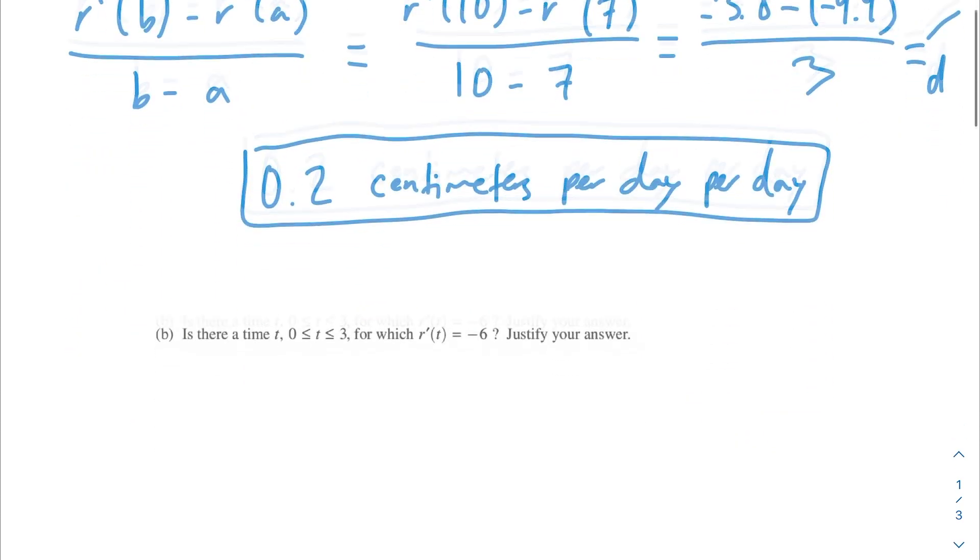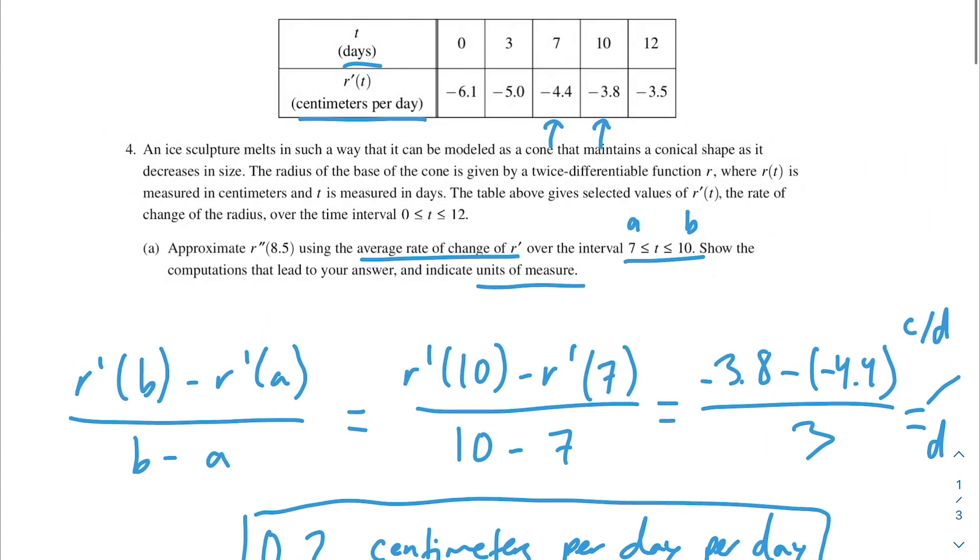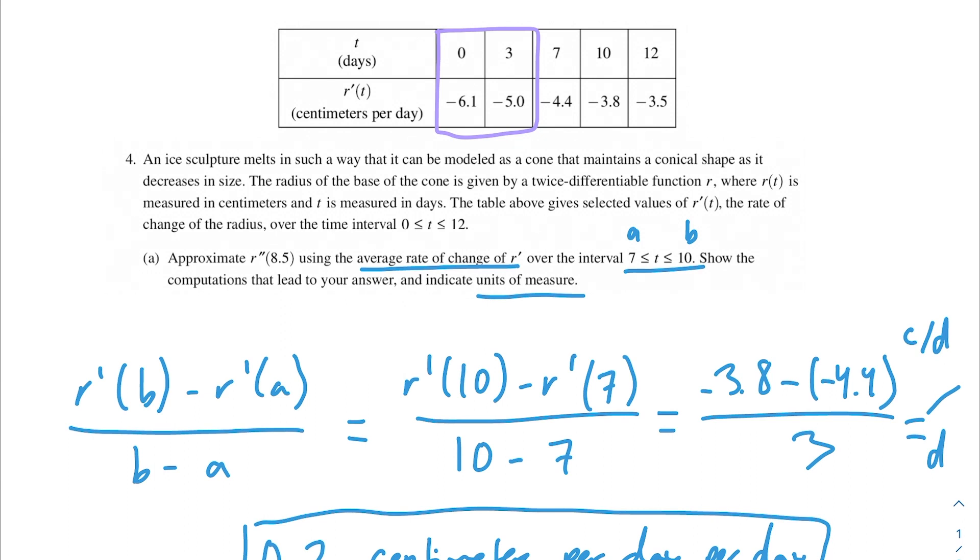Moving on to part b, it asks, is there a time t between 0 and 3 for which r'(t) is equal to -6, and we need to justify our answer? I would say yes. So if we take a look at our data table, we're sort of honing in on this section of our data table, and you'll notice that between 0 and 3, r'(0) is -6.1, and then r'(3) is -5.0. There's a theorem that can help us out with this called the intermediate value theorem, but it's only true for functions that are continuous. So we can pick out some information from our problem to prove to ourselves that this function is actually continuous. This is a twice differentiable function, which means it's differentiable, which means it has to be continuous.